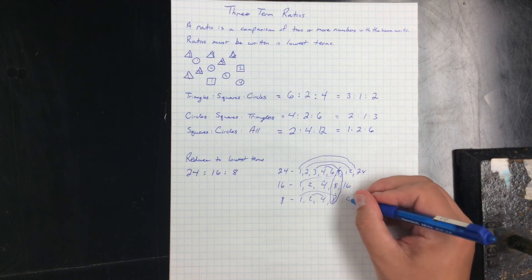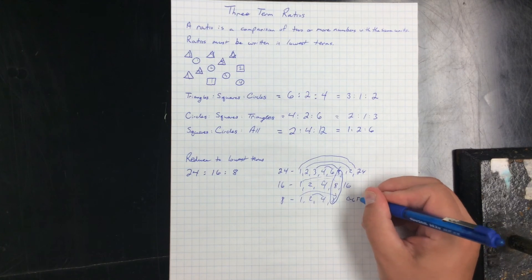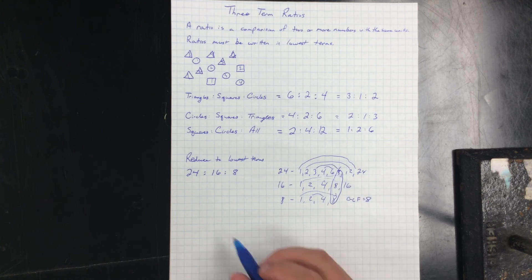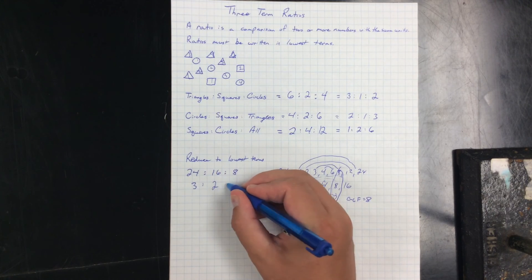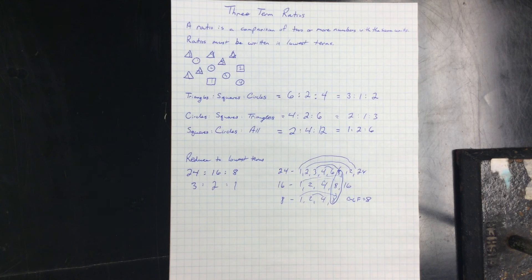That's what I'm going to divide by. Twenty-four divided by eight is three. Sixteen divided by eight is two. Eight divided by eight is one. So in lowest terms, it's three to two to one.